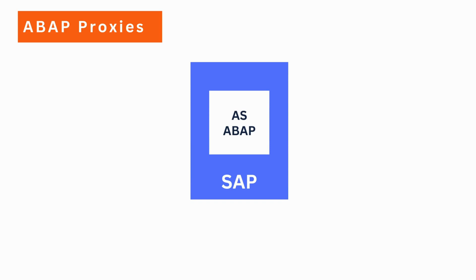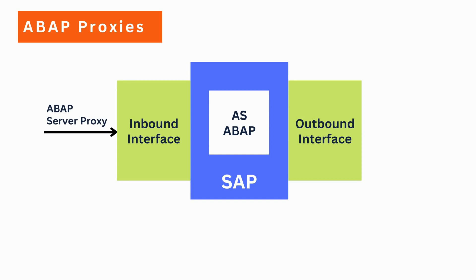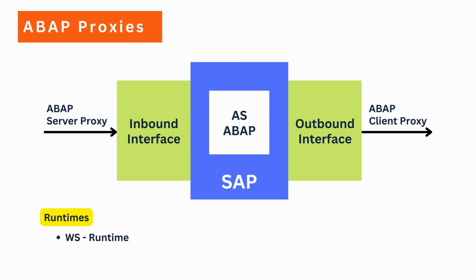We can have an interface like an inbound interface or an outbound interface. We generate ABAP server proxies by using inbound interfaces, and we generate ABAP client proxies by using outbound interfaces. SAP ABAP server provides two different types of runtimes for proxy communication: web service runtime, used for direct communication, and XA runtime using XA 3.0 protocol for communication with SAP PI/PO.